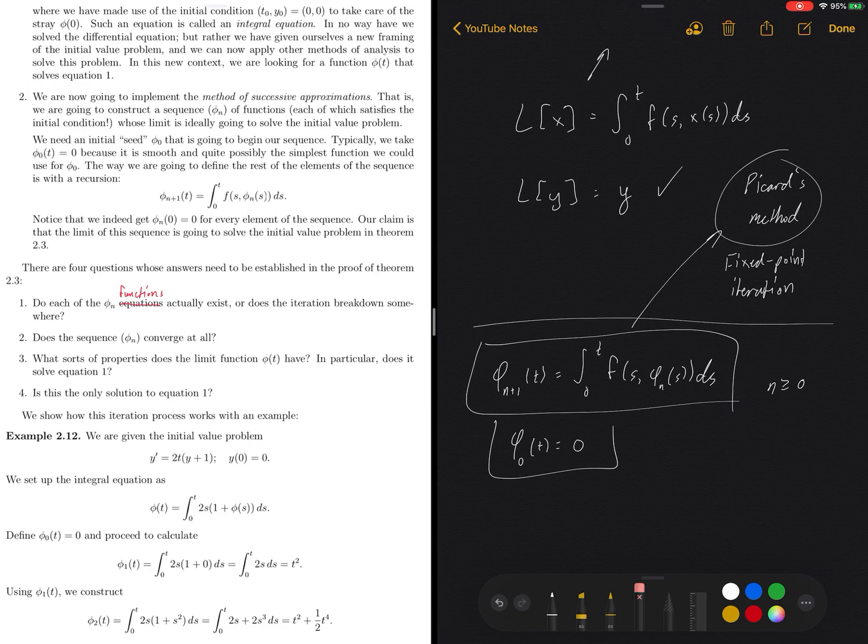This is an introduction to Picard's iteration or Picard's method, and this is effectively going to be our proof strategy for showing that the existence and uniqueness theorem is valid. So let's go ahead and stop here.